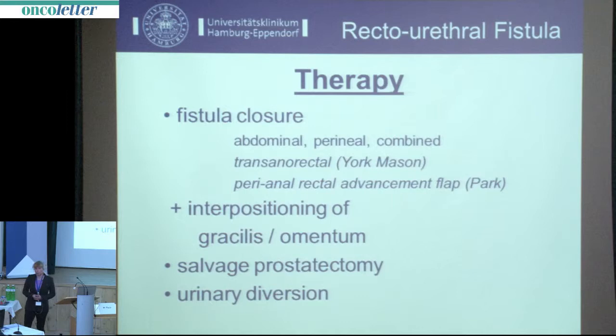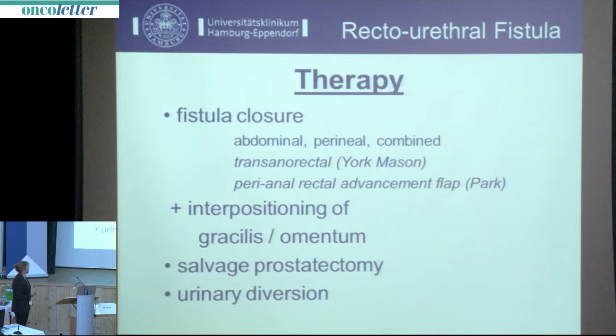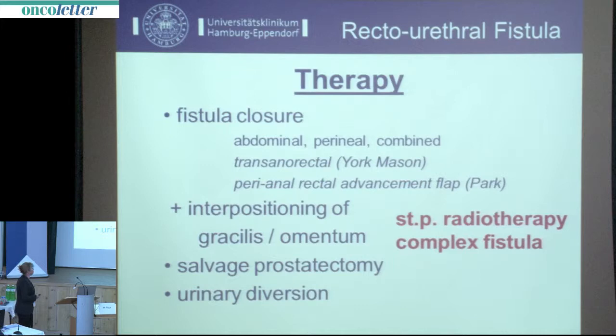Therapeutic options for fistula closure in simple fistulas include abdominal, perineal-combined, trans-anal, rectal, or perineal-rectal approaches — mainly used by rectal or general surgeons. Reconstructive urologists prefer other approaches. Additional tissue interposition such as omentum or gracilis should be done in patients who had previous radiotherapy or have complex fistulas. Some cases need salvage prostatectomy, and some will end in urinary diversion.